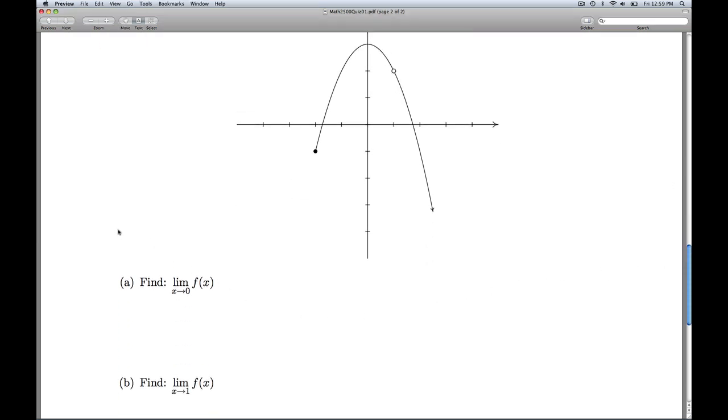Part b, we're looking for the limit as x approaches 1. So once again, here's x equals 1. Coming in from the left, coming in from the right. I go up to the graph and see what's happening there. And I'm looking at where the y values are going. So as I'm coming in this way, the y values are heading down this way.